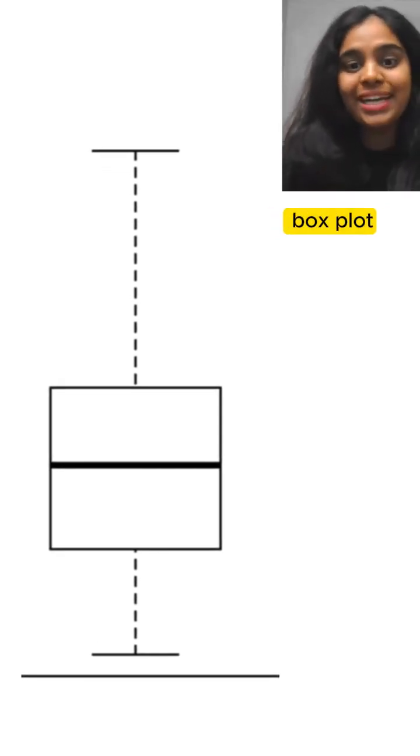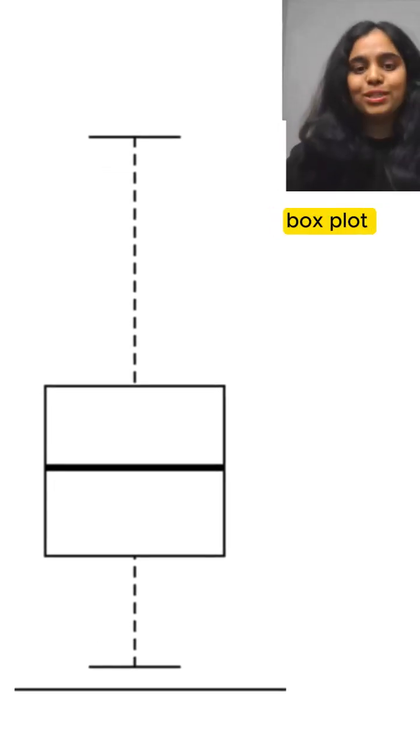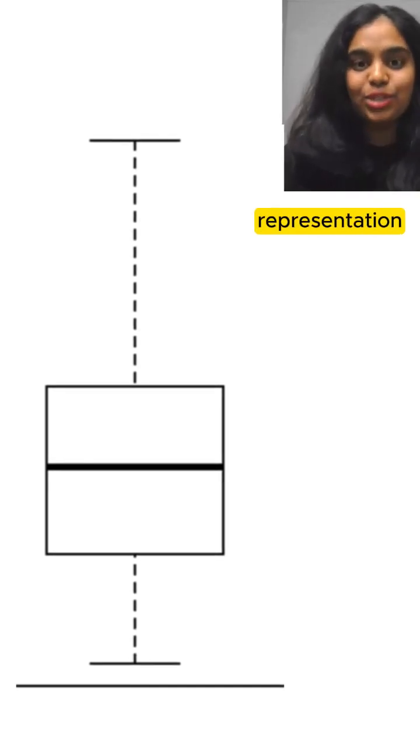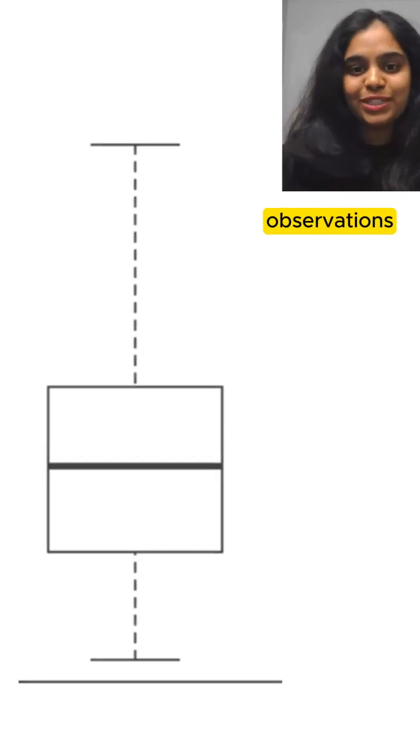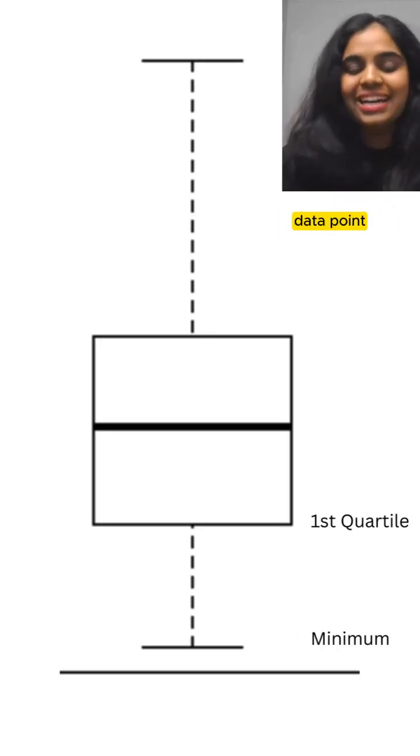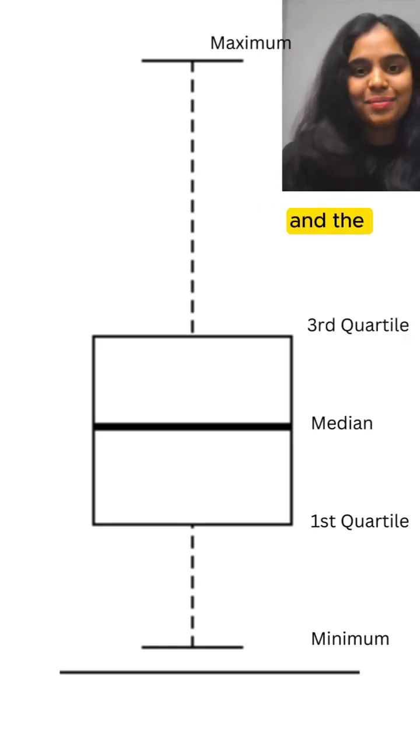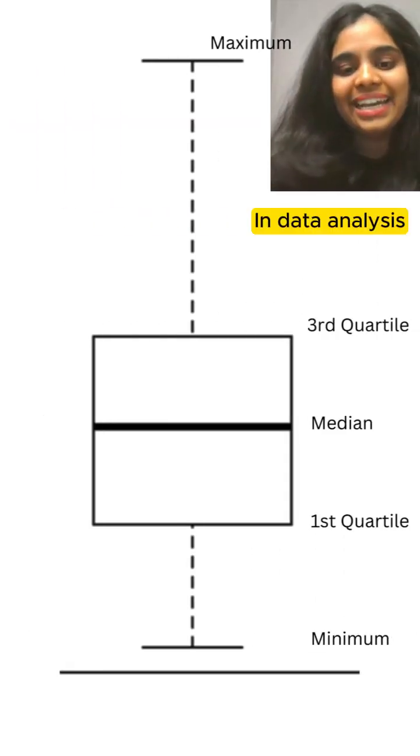Let's try to understand what is a box plot and how is a box plot interpreted. A box plot is just a graphical representation of five number summary, and these five number summaries include a set of observations such as minimum data point, first quartile which is also the 25th percentile, median, third quartile, and the maximum data point.